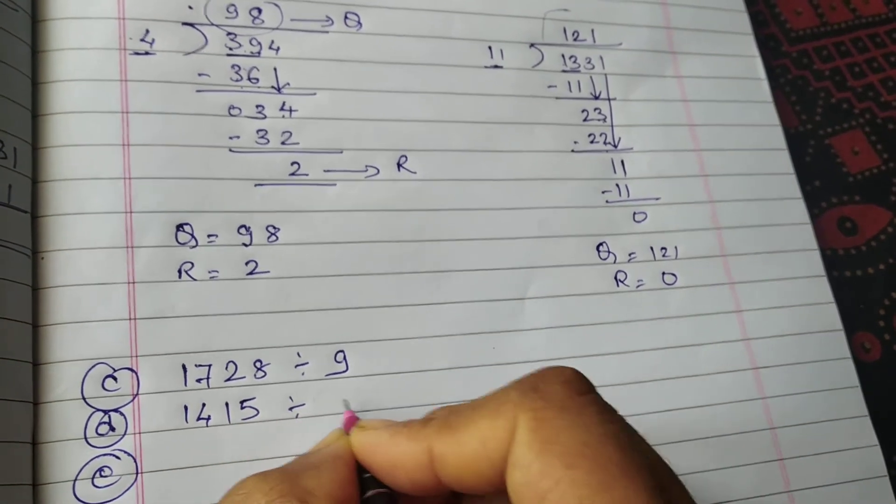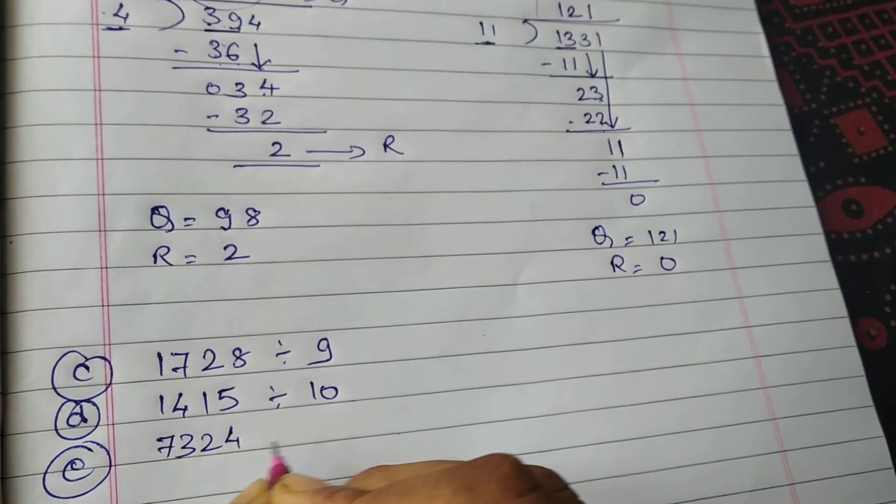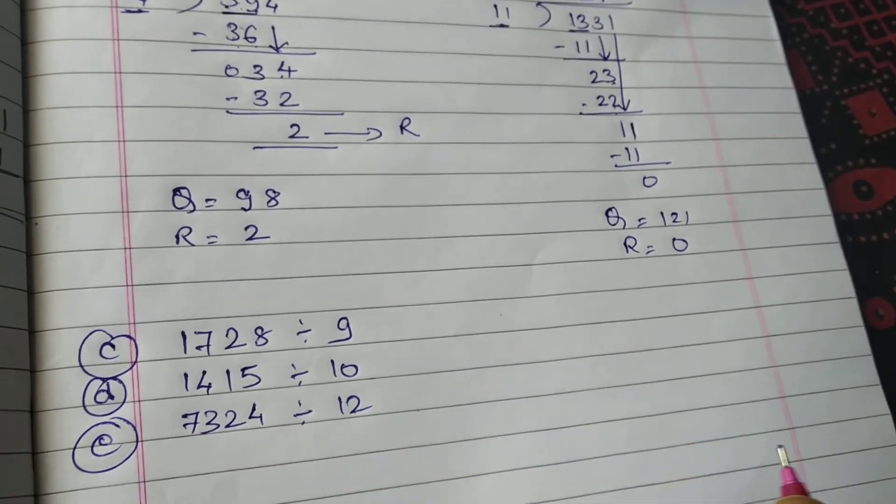1415 divided by 10. 7324 divided by 12. Okay.